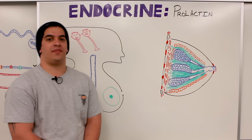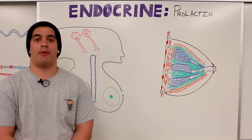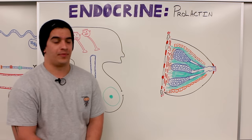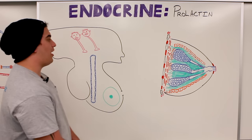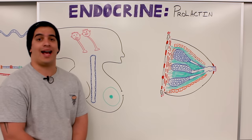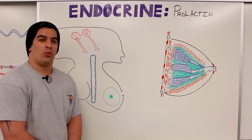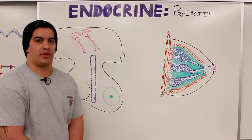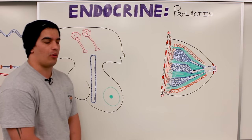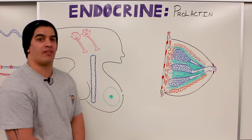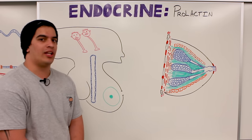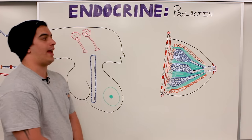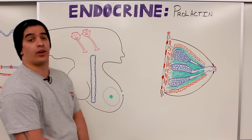In this video, we're going to talk about prolactin. If you remember from the hypothalamic pituitary axis video, we discussed what were the stimuli and what were some of the inhibiting factors for prolactin. We're going to get into a little bit more detail on that and look at its effect on target organs.